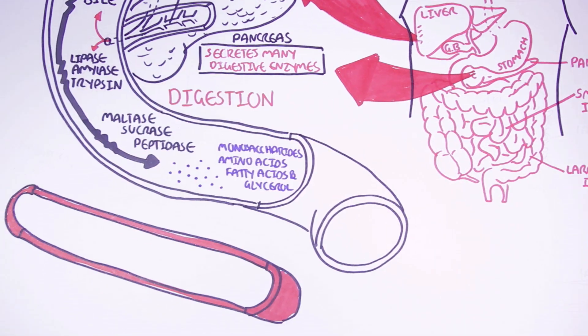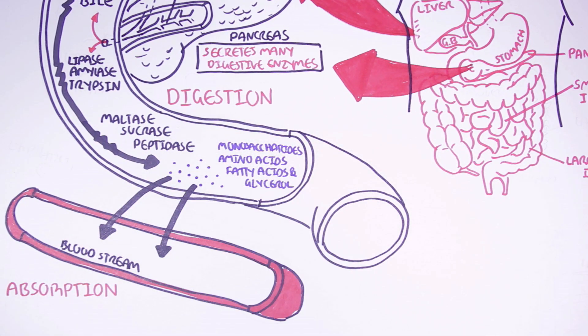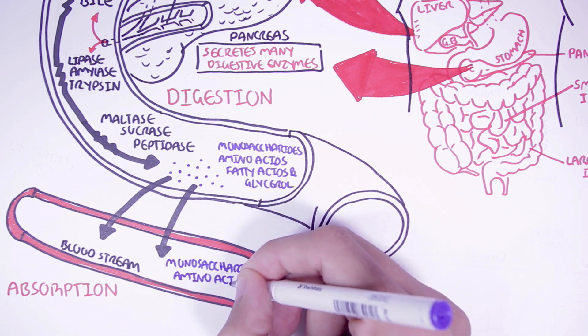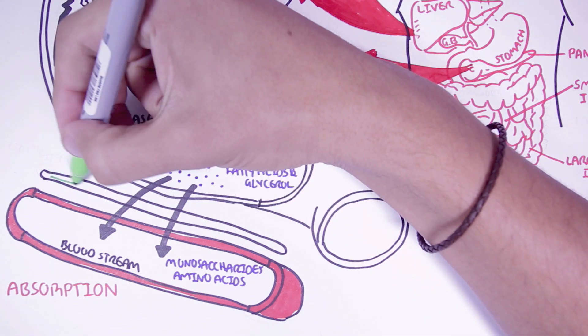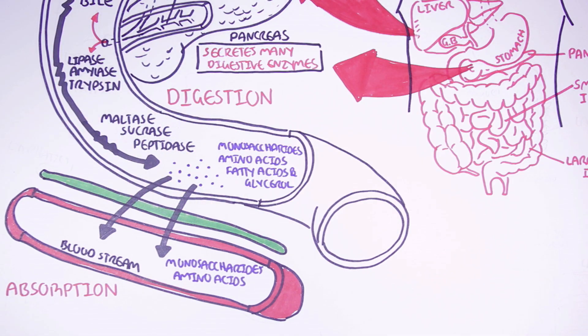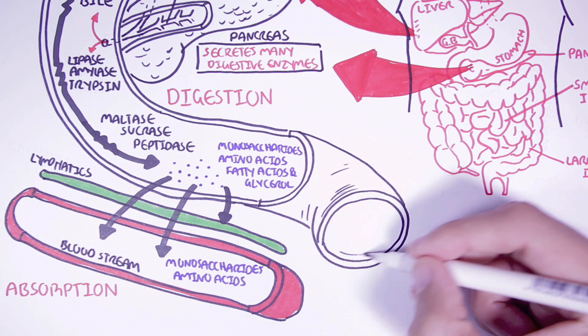So the monosaccharides and amino acids are able to be absorbed by the small intestine into the bloodstream, where it will then travel to specific areas in the body. The fatty acids are absorbed by the small intestine into the lymphatics with the help of bile. So from all this, we can see how the small intestine is the major place for the digestion and absorption of food.